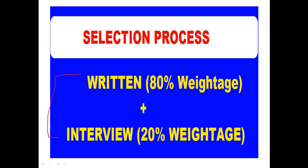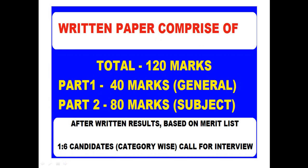The selection process is based on a written exam and interview. Written exam weightage is 80 percent and interview weightage is 20 percent. The written paper has a total of 120 marks — Part 1 is 40 marks covering Quantitative Aptitude, English, Reasoning, and Data Interpretation, and Part 2 is 80 marks on electrical subjects. After written results, based on merit list, 1 to 6 candidates will be shortlisted for the interview.